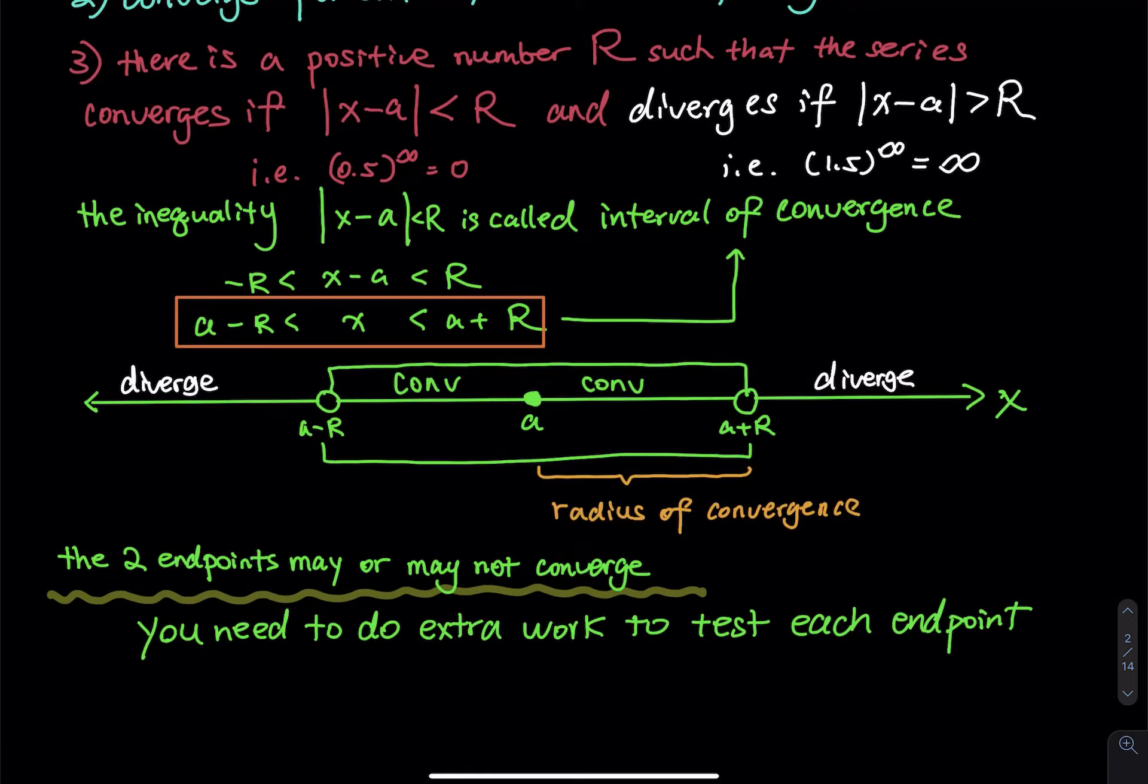Take a look at what I underlined. The two endpoints may or may not converge. x equals a minus R, x equals a plus R. Those values may or may not make the series converge. Please listen to me. You have to test the endpoint. You will see that in the first problem in the next video. You must test the endpoint. Sometimes the testing will take a lot of work. Trust me. In some problems, the testing will take a lot of work.